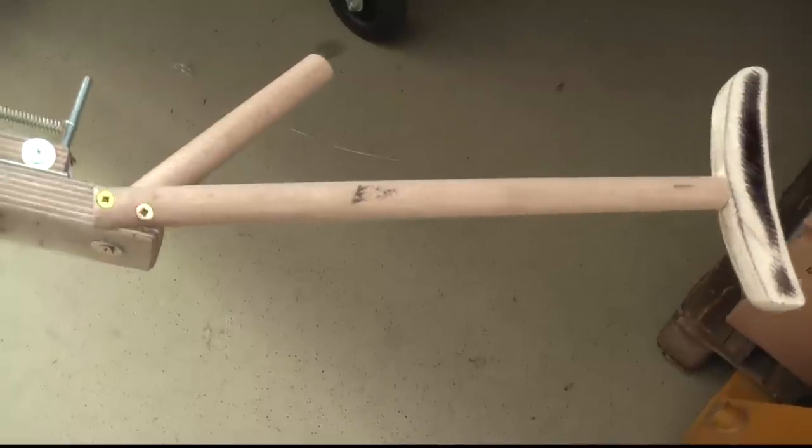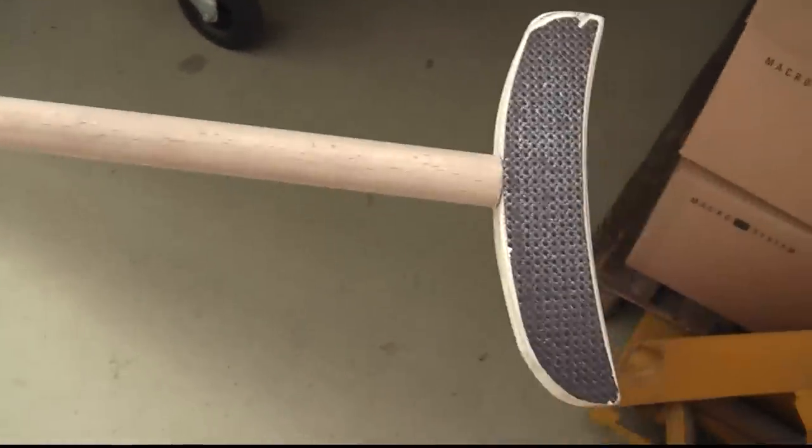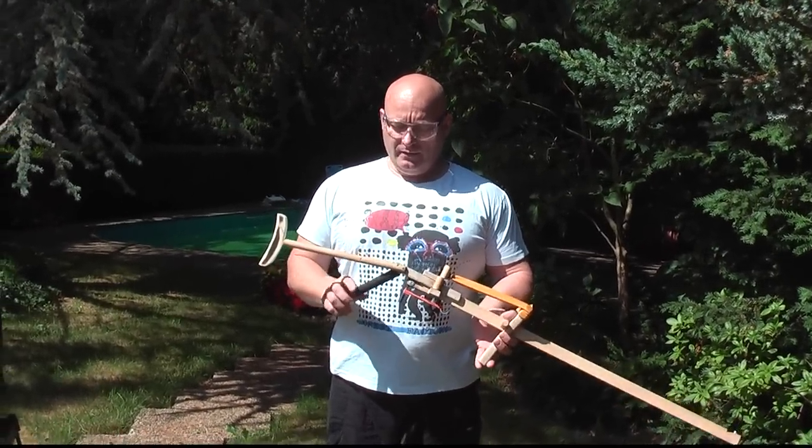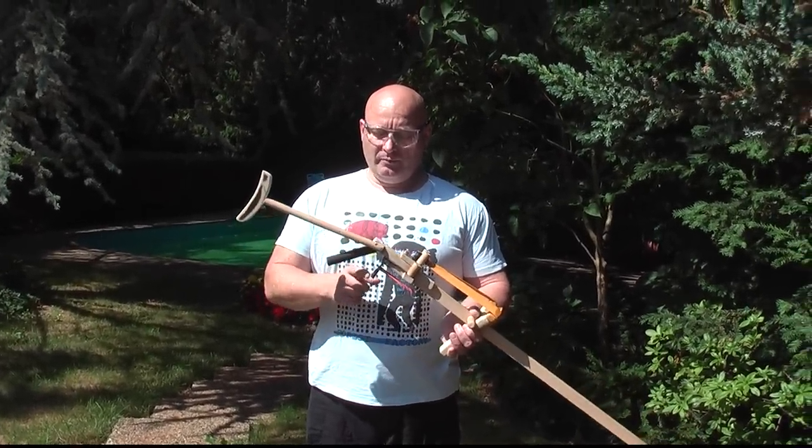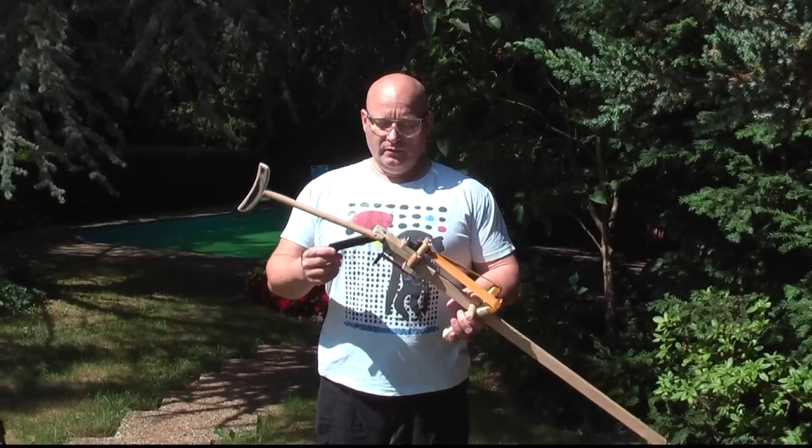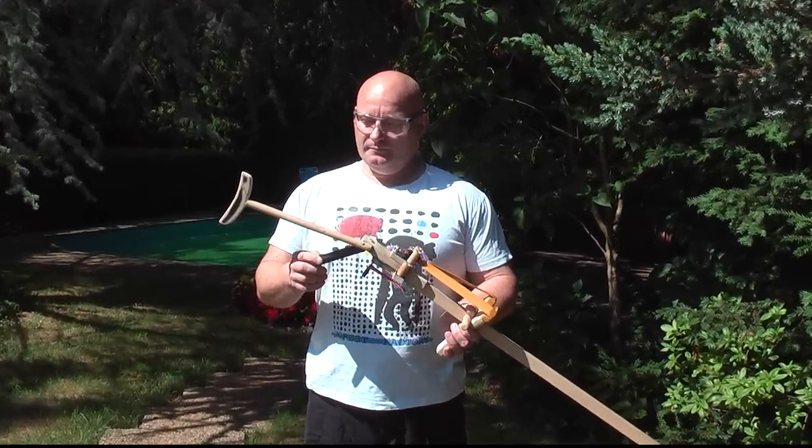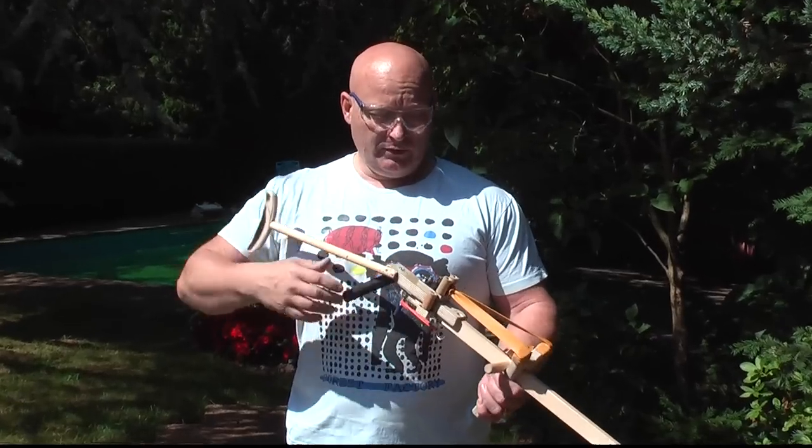So now we have attached a very simple stock. It's really simple. So I did some final last changes. Wrapped the handle in paracord. Put a little bit of rubber over the trigger. And also I used rubber instead of the spring to show you that that works. Everything is finished now.